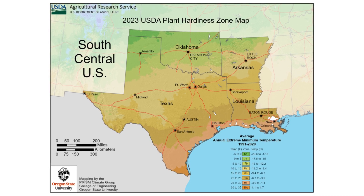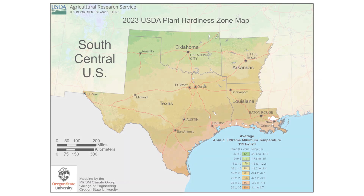I'm not quite sure when the USDA updated the zone map, but they absolutely did for our area, and according to the map legend, the update is based on statistics from 1991 to 2020. So if you are interested, I suggest you click on the link above, enter your zip code in the zip code search, and find out if your USDA hardiness zone has changed based on those new statistics.